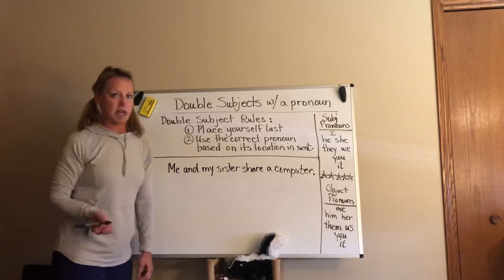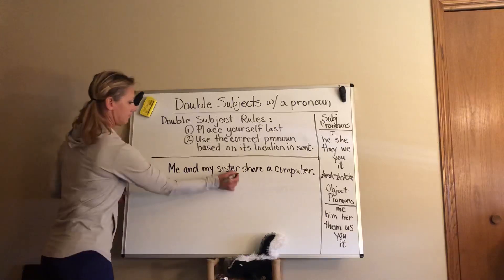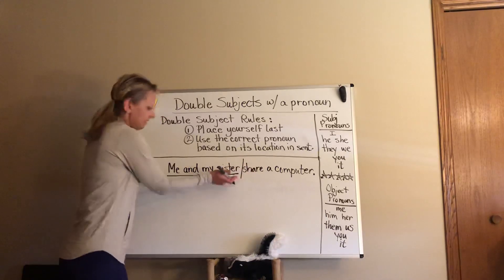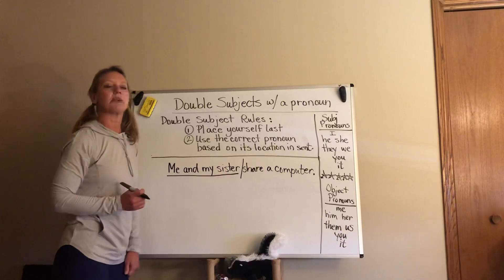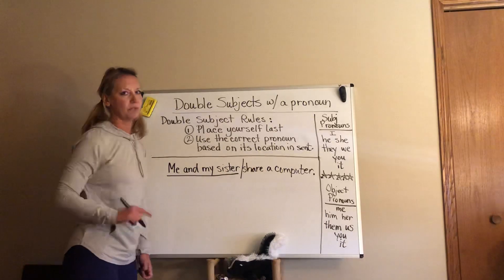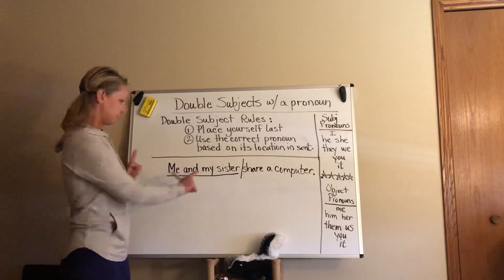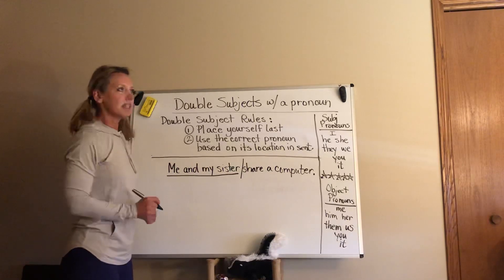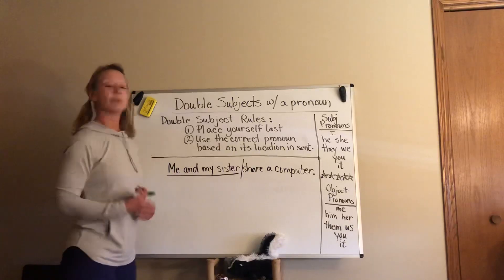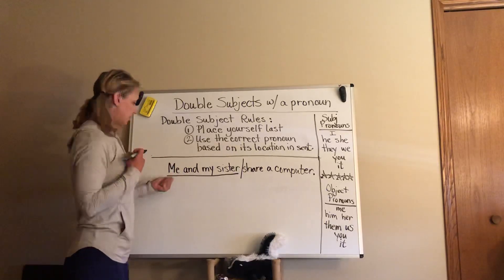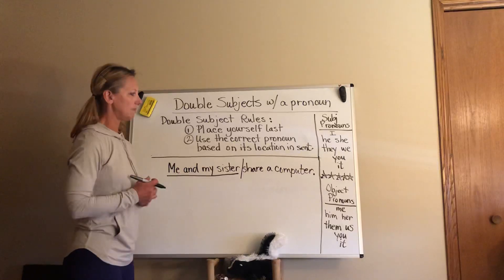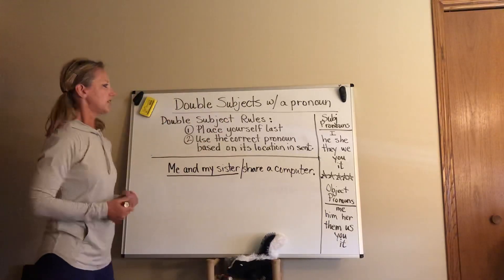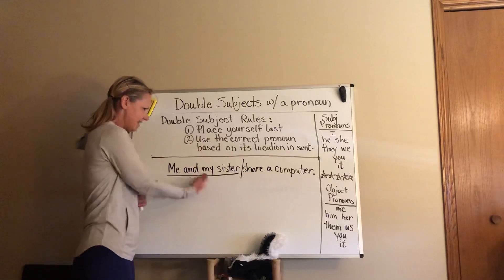You can see that I included a double subject — we're talking about two people sharing a computer. Our subject would be here, with that slash mark separating the subject from the predicate. We've got a double subject, two people, and one of them is a pronoun referring to myself. So I'm talking about myself — I've got two people. Now did I follow my rules? Let's look at rule number one: place yourself last.